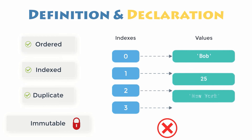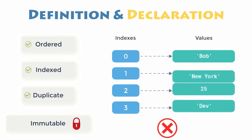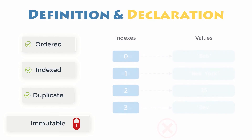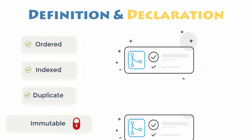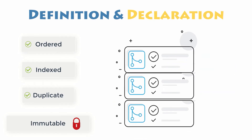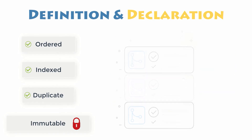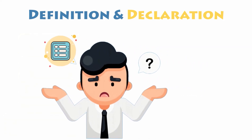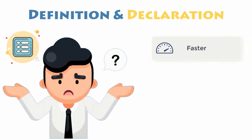Lists and tuples can contain duplicate members, except that tuples are immutable, which means you theoretically cannot add, delete, or change items inside the tuple once created. Nonetheless, you can iterate through a tuple with a simple for loop.